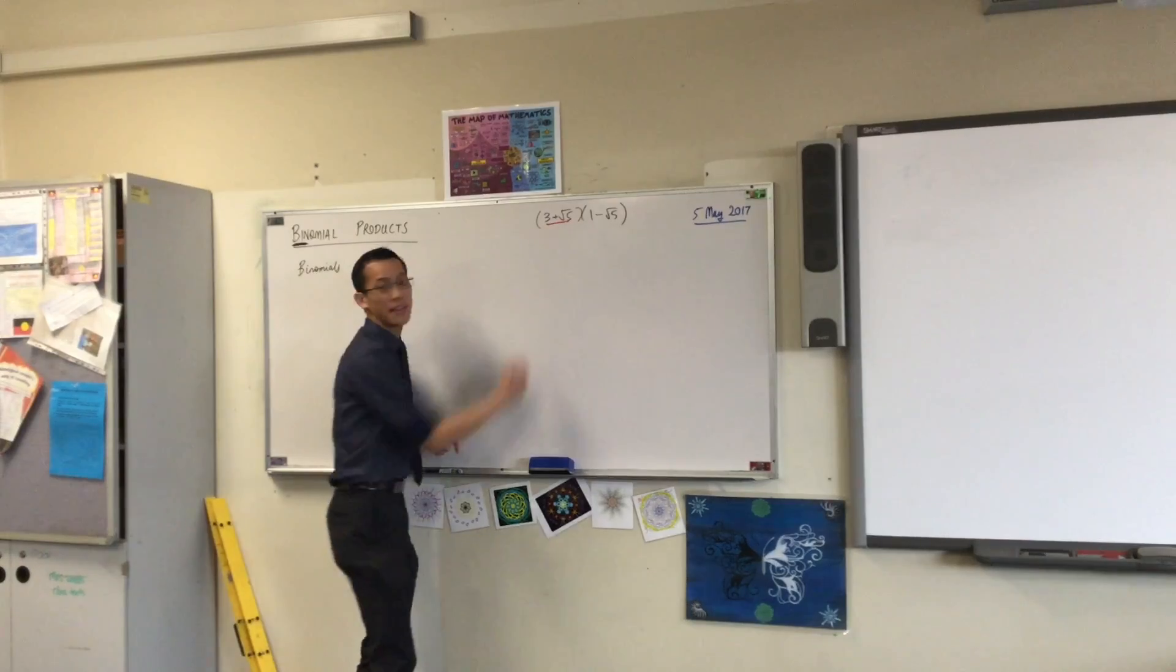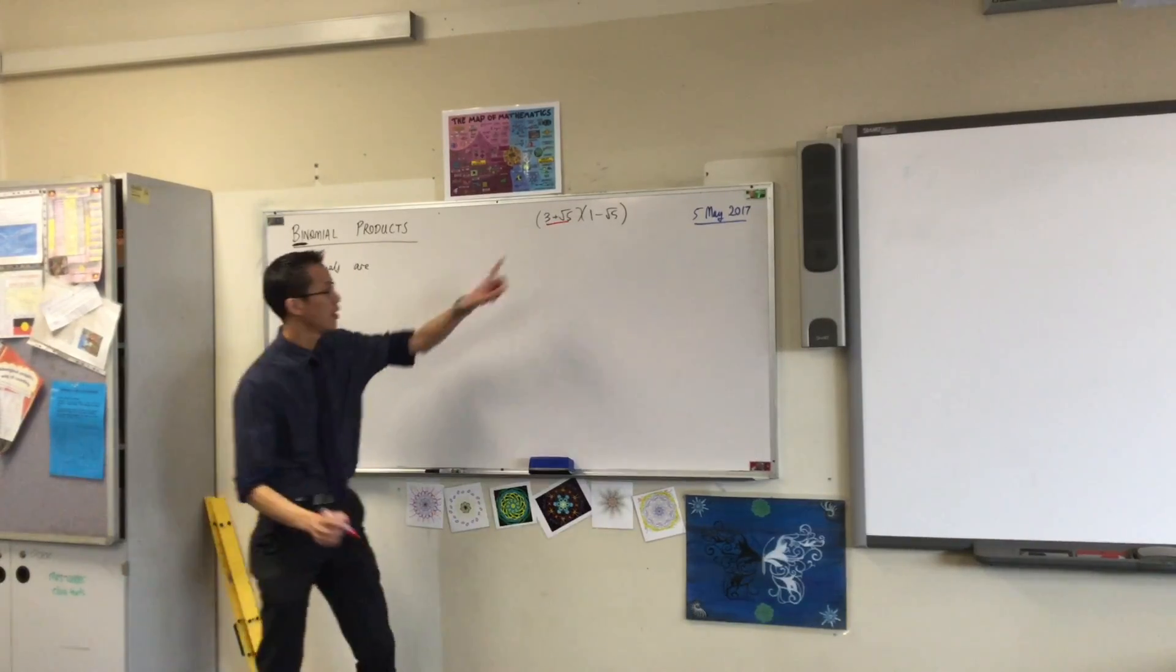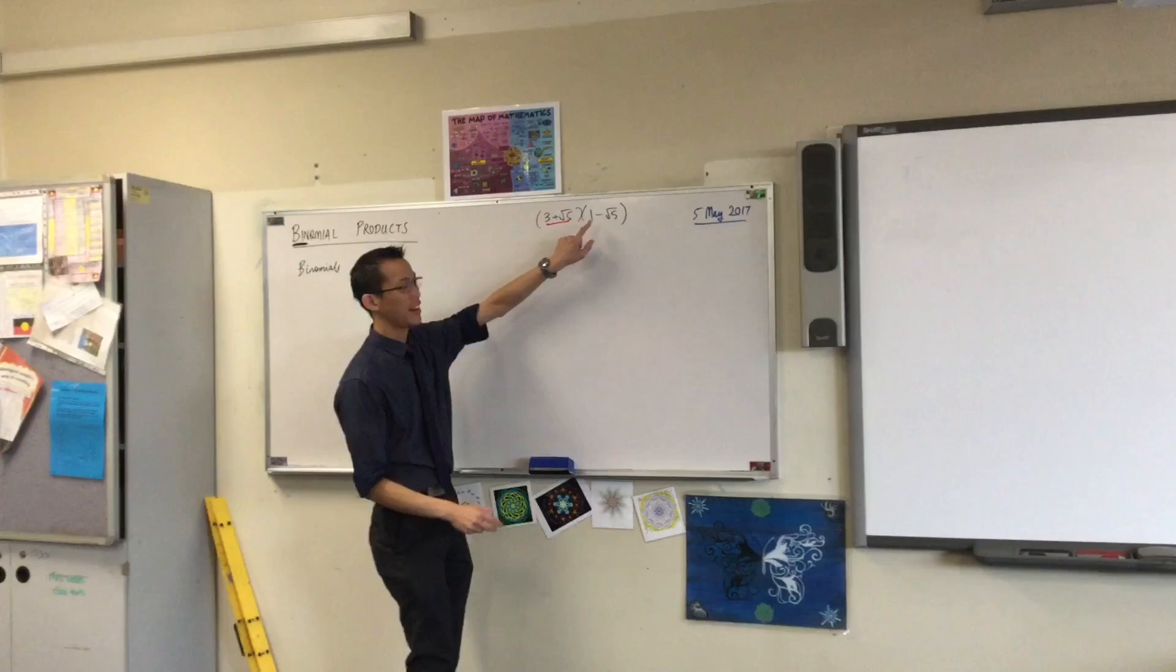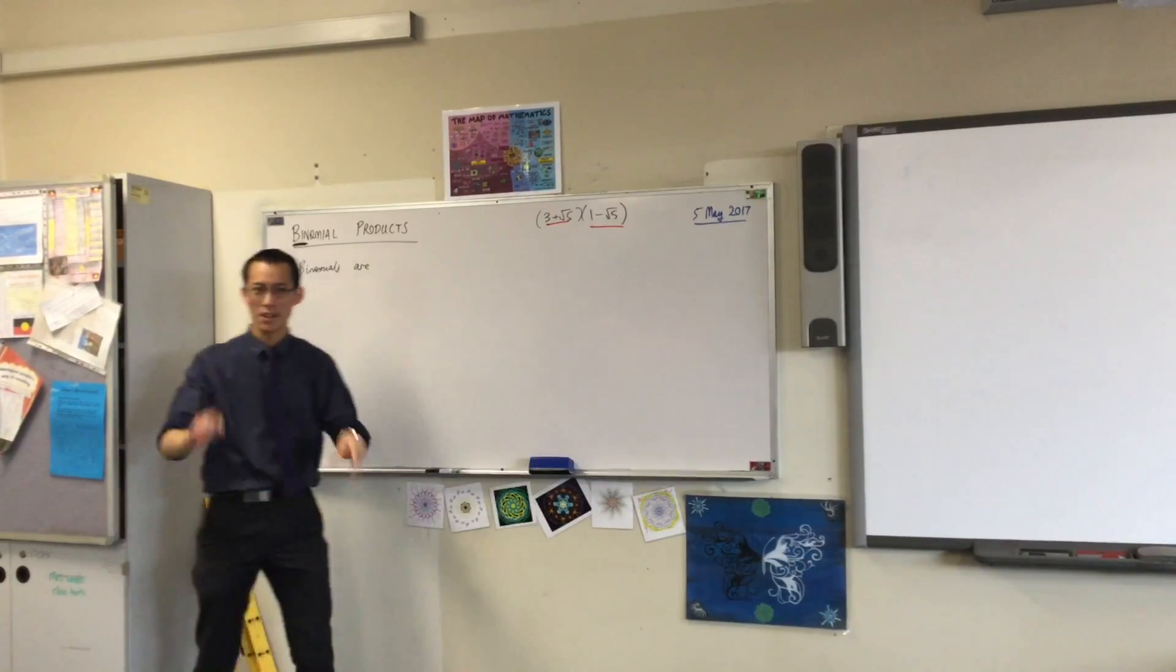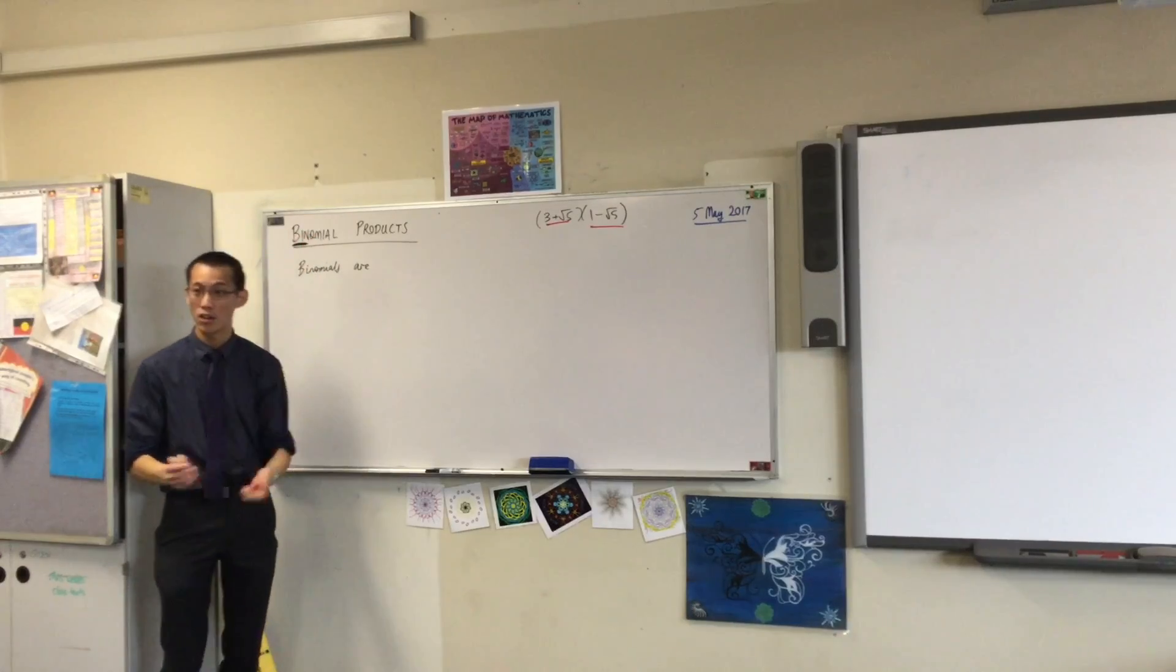Here is one, that's a binomial, okay? Because look, there's this and this, two things, and then here is the other one. One, negative root five, those are the two pieces that make the binomial, okay?